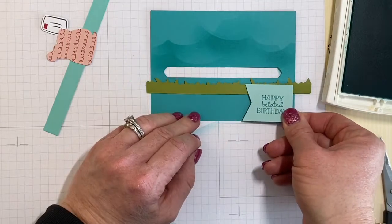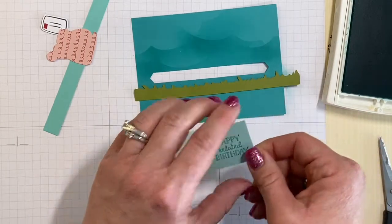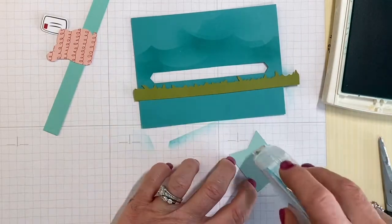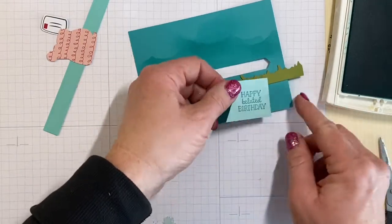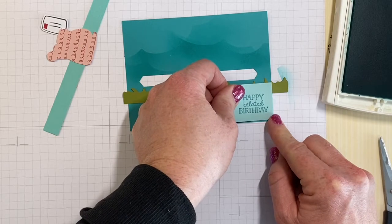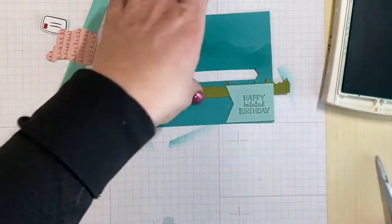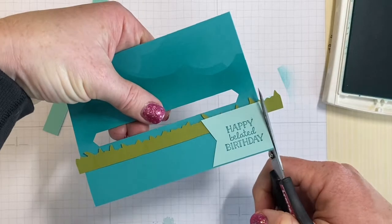This greeting is going to layer on top of the card and you're going to want to use Stampin' Seal to do that. And then trim off the excess grass.